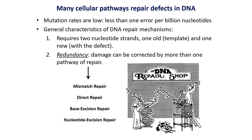Another requirement for DNA repair mechanisms is redundancy, since it is possible that one of these pathways could fail, but thankfully you have another pathway that can pick up the slack. Damage can be corrected by more than one pathway of repair. So if your base excision repair doesn't work, you've got three other different types of DNA repair mechanisms that can maybe pick up the slack.